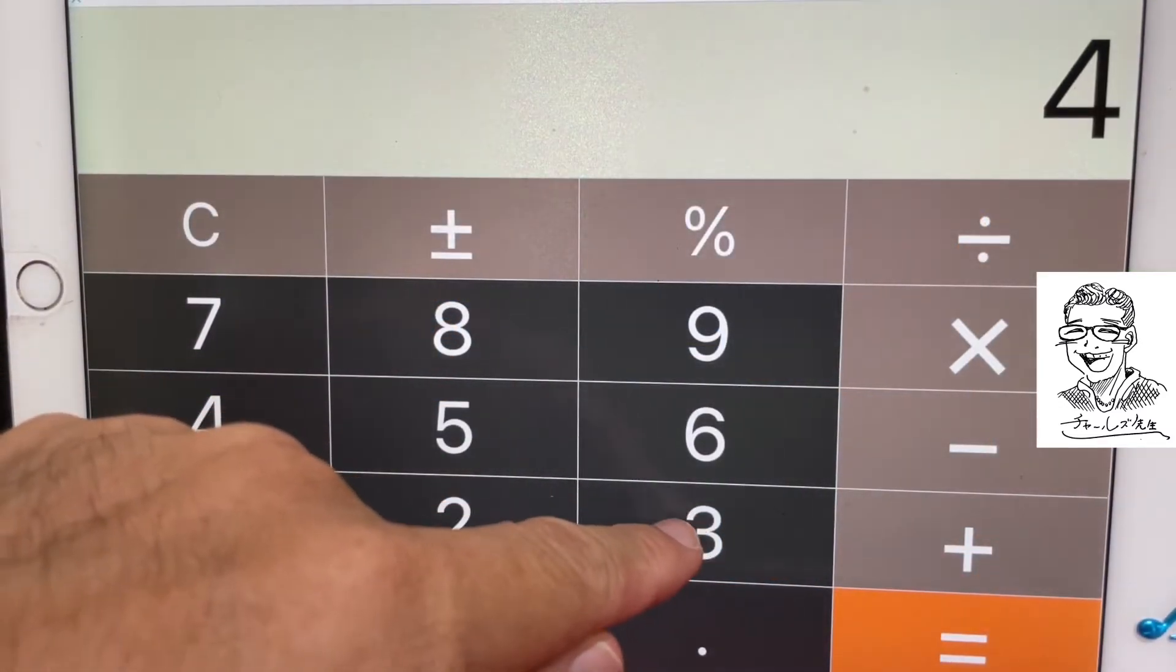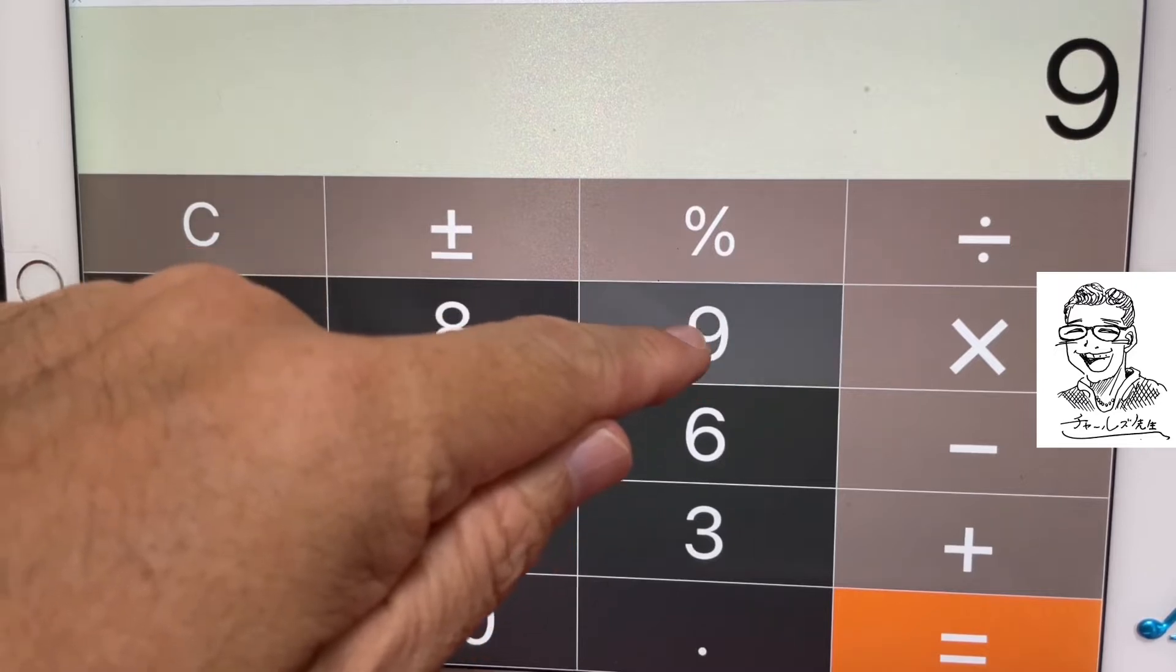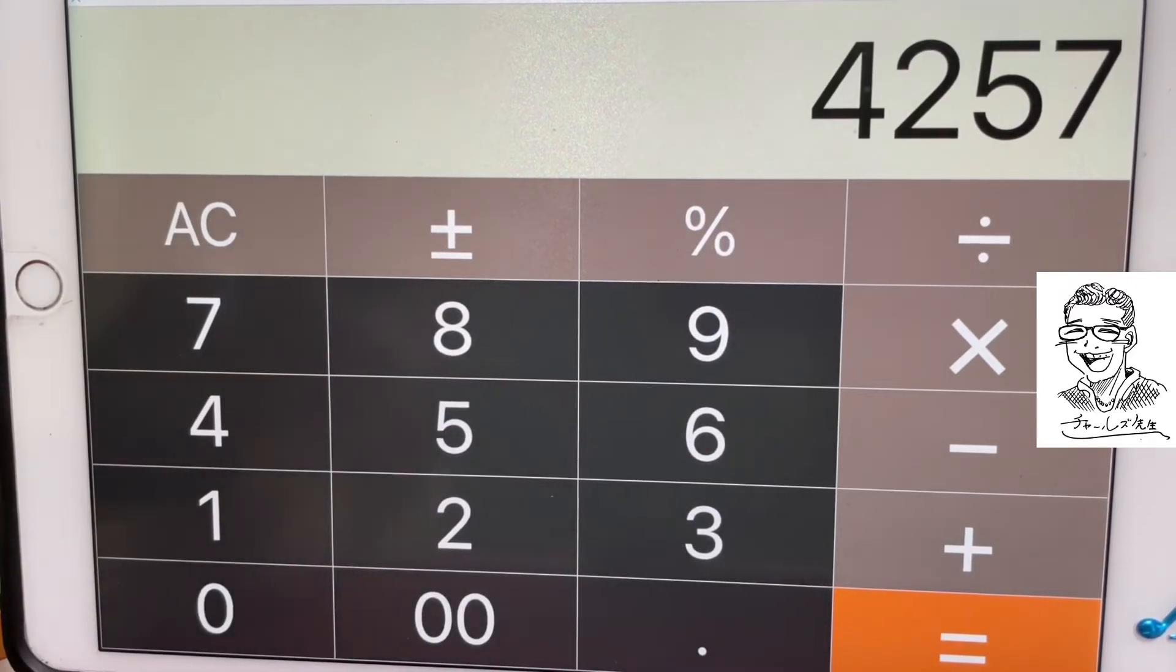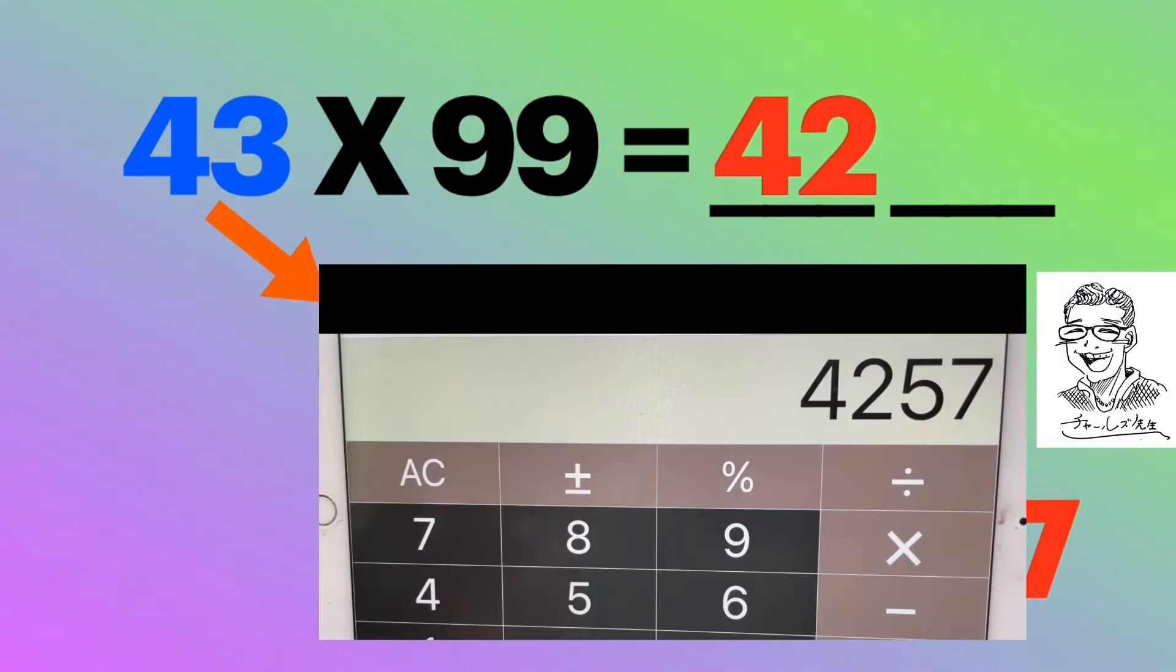So let's check. 43 times 99 equals 4257. And that's correct.